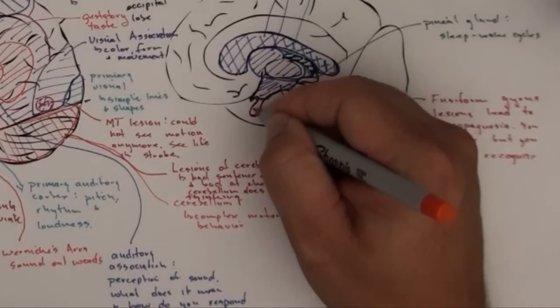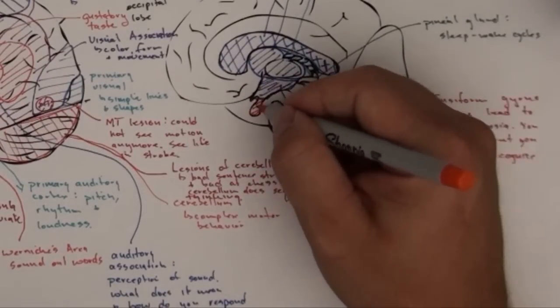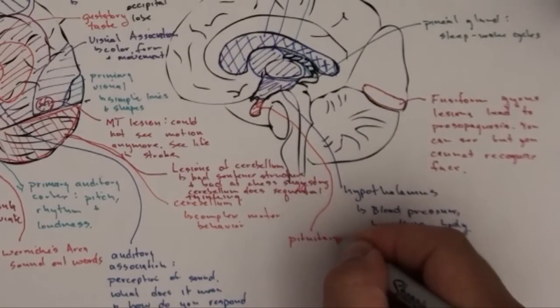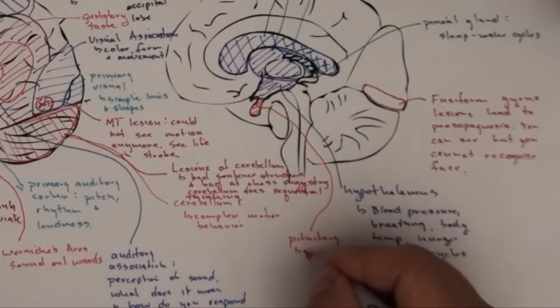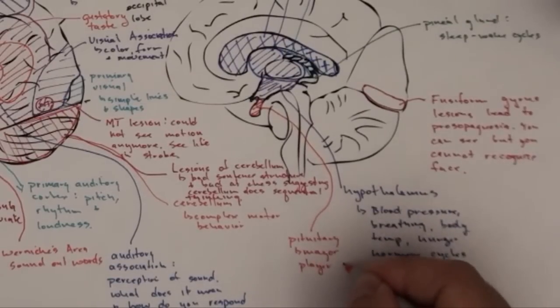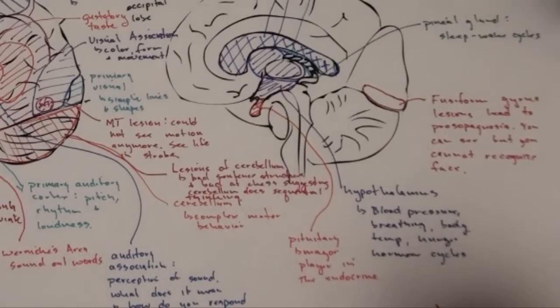As long as we're talking about hormone cycles, this guy right here is the pituitary, major player in the endocrine system. It has two parts, posterior and anterior. Posterior puts out two hormones. Anterior puts out five hormones. We'll talk about that in the endocrine system.